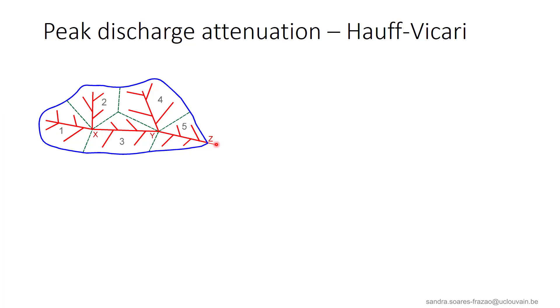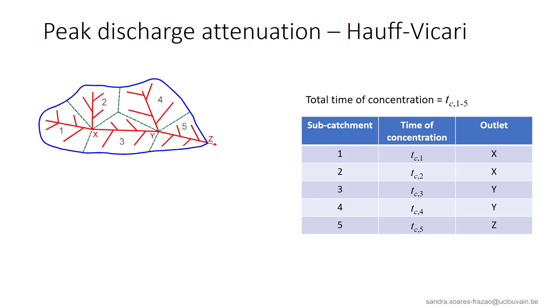For example, the water collected from subcatchment 1 will flow until point X, and then flow through the drainage system from X to Z at the outlet. On the opposite, the water collected from subcatchment 5 will directly arrive at point Z. Let us consider that each subcatchment has its own time of concentration until its outlet. For example, Tc1 and Tc2 are the times of concentration of subcatchment 1 and 2, respectively, until point X. Tc3 and Tc4 are the times of concentration of subcatchment 3 and 4, respectively, until point Y. And Tc5 is the time of concentration of subcatchment 5 until point Z. So the total time of concentration of the whole catchment will be denoted Tc15.